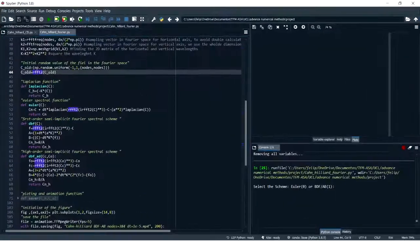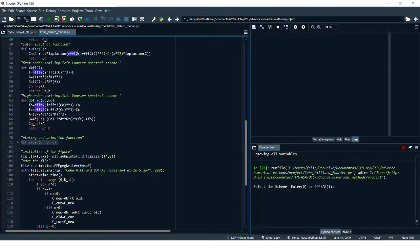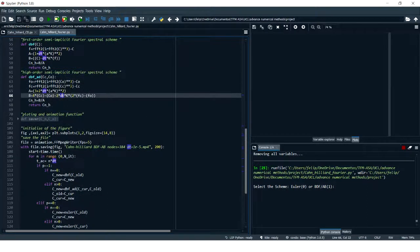For the BDF/AB approach, we did almost the same with the two equations that my partner has already explained. This one is the first one to find the first value of the iteration. Then we find a new value using the old value. And then we find the current value with the second equation that was already explained.